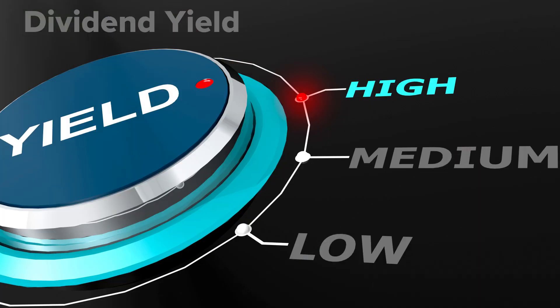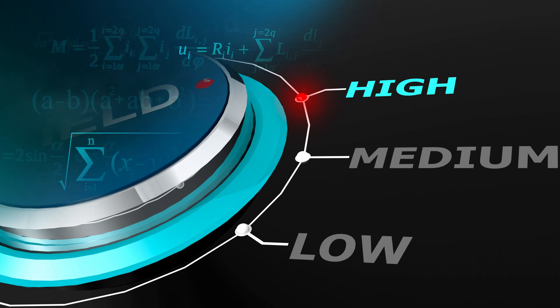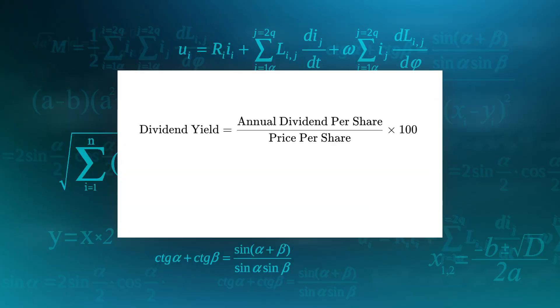Now let's talk about dividend yield, which is a key metric for investors looking for income from their stock investments. Dividend yield represents the annual return on an investment based on the dividend income relative to the stock price. To calculate dividend yield, use the formula: Dividend Yield = (Annual Dividend Per Share ÷ Stock Price) × 100. For example, if a company pays an annual dividend of $4 per share and the current stock price is $100, the dividend yield would be 4 ÷ 100 × 100 = 4%. The dividend yield helps investors understand the return they can expect from a stock in the form of dividends.